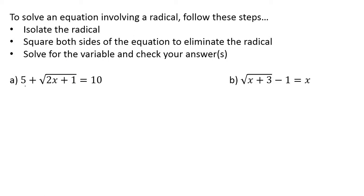So let's do a couple examples here. So again, let's isolate this, so let's subtract that 5 over, so that would be square root 2x plus 1 equals 5, right? 10 minus 5. Square both sides.